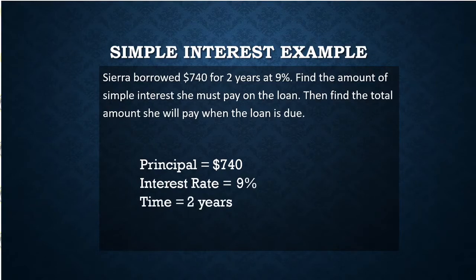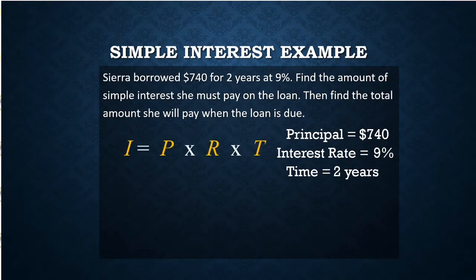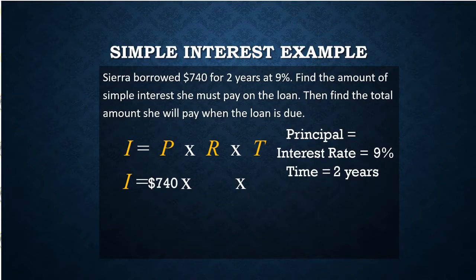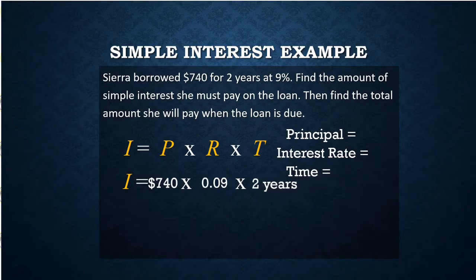Once we have our three values, we can put them into the formula. The formula is principal times rate times time. The principal is $740, and that goes straight into our formula. Now for the rate — we could use nine percent if the calculator you're using has a percent key. If your calculator doesn't have a percent key, you need to convert that percent to a decimal. The word percent means per 100, or divide by 100. So to change any percent to a decimal, you just divide by 100 — nine divided by 100 — or you can move the decimal place two places to the left. So nine percent becomes 0.09. And then our time is two years. Since it's already in years, we don't have to do anything with that.